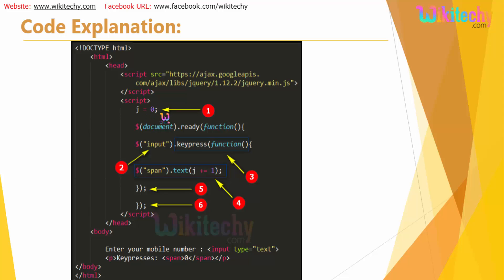I have a variable j initialized to 0. Inside the document ready function, you will be adding your keypress event. This is the standard approach — you have to follow this as a standard for all jQuery programs.